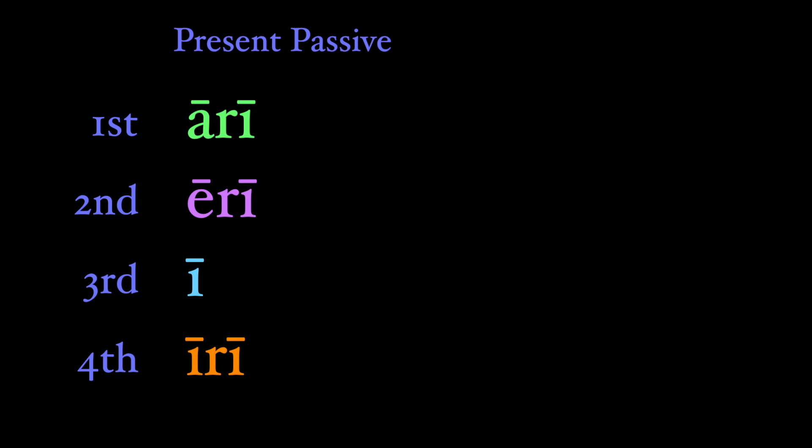The present passive infinitive ends in -rī for verbs of the first, second, and fourth conjugations, and so we drop off the -re and add -rī. But third conjugation verbs drop the full -ere ending and replace it with just a long ī.